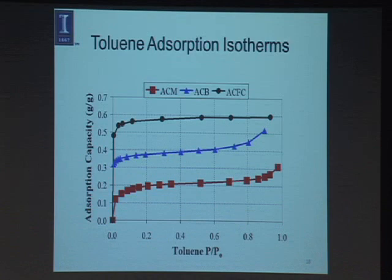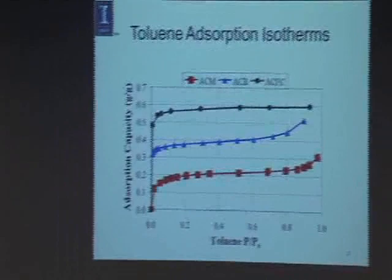We also look at adsorption capacity — that relates to both operating costs and capital costs. Looking at adsorption capacity versus concentration of toluene, expressed as partial pressure over saturation partial pressure, the porosity of the activated carbon monolith was much less than the beads and the activated carbon fiber cloth, and that really shows up in the adsorption capacities. That tells you how long the vessel can stay on line before it needs to be regenerated.